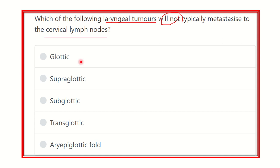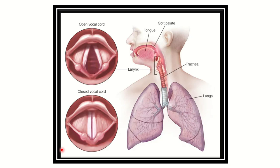The options are: glottic, supraglottic, subglottic, transglottic, and epiglottic fold. Looking at the picture here, we can see the vocal fold or vocal cord in the opening position and in the closed position. Some area lies above the vocal cord and some area lies below it.